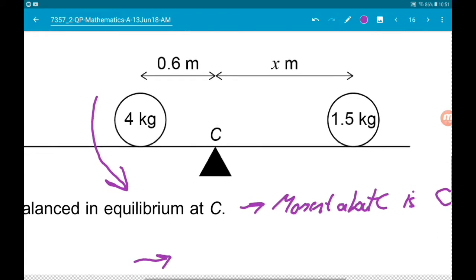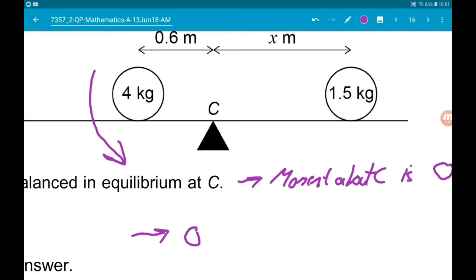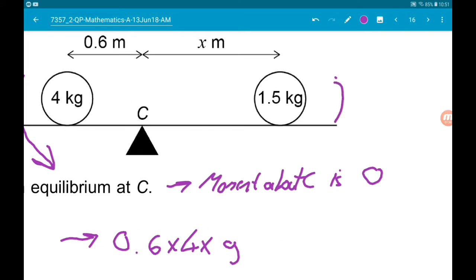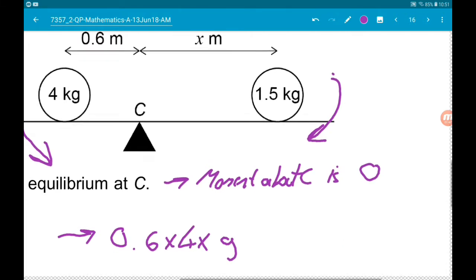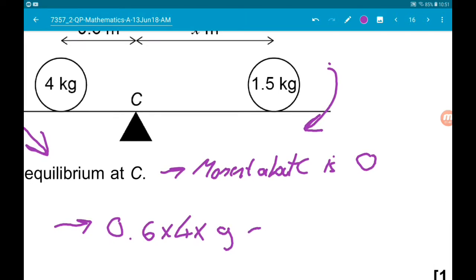We get 0.6 times 4 times g minus, now it's minus because this one is acting clockwise, so minus 1.5 times X times g.